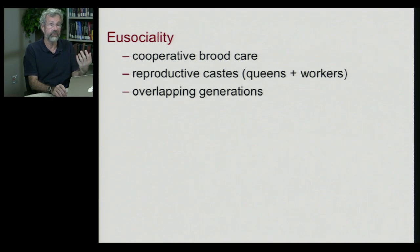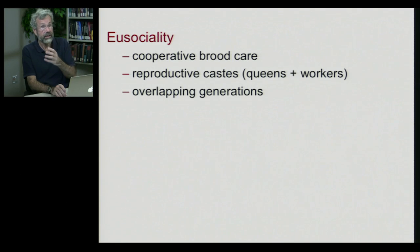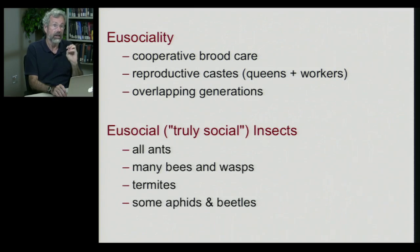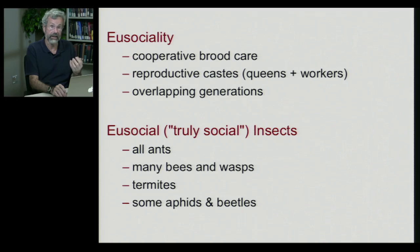The kind of system that gave Darwin nightmares — thinking about how his theory might be wrong because animals were too nice to each other — involves social insects. Social insects often have a social system we refer to as eusociality. This is where you have cooperative brood care, reproductive castes with a queen versus many workers, and overlapping generations where workers live, die, and are replaced. All ants are eusocial, as are many bees, wasps, termites, and a few other insects like aphids and beetles.